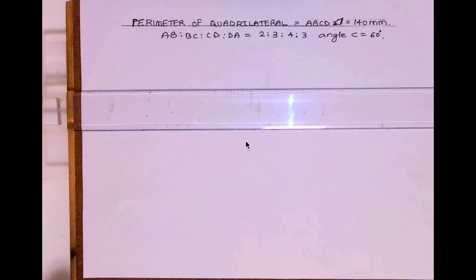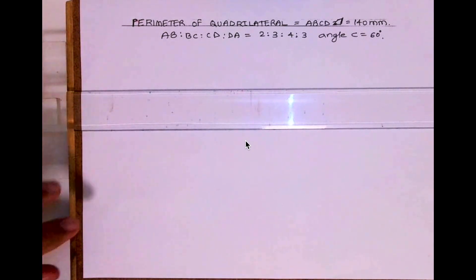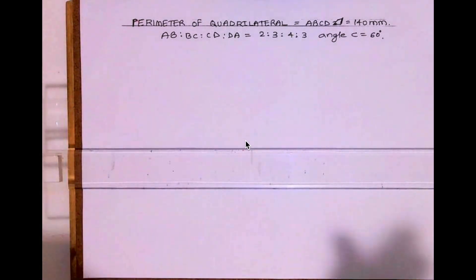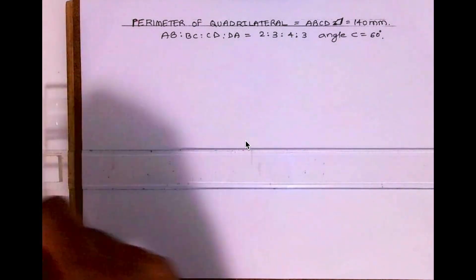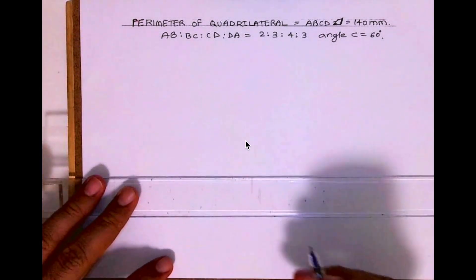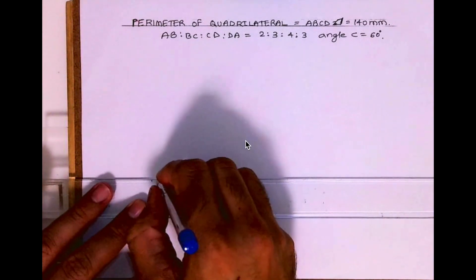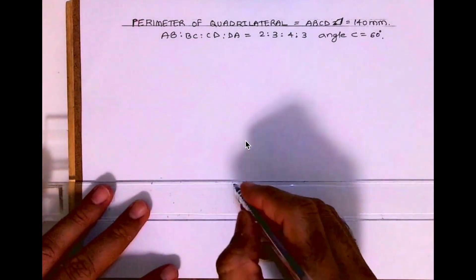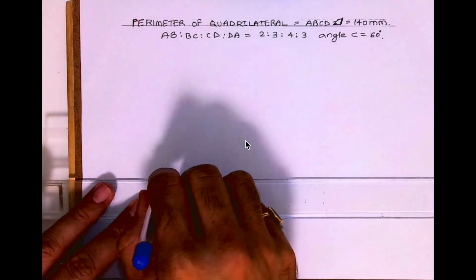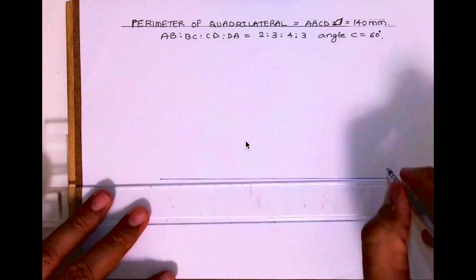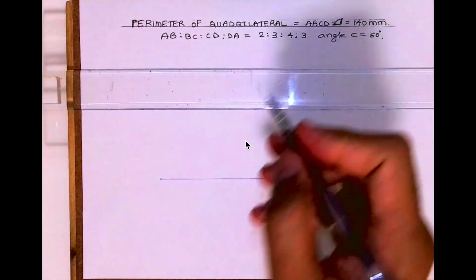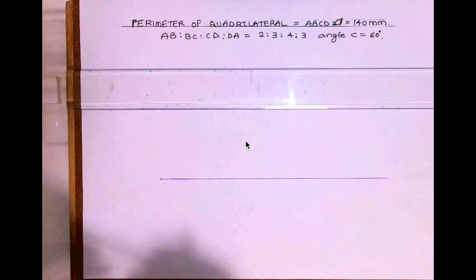Welcome to technical drawing. Today we learn how to draw a quadrilateral. The perimeter is given — 140 mm — and the sides are in the ratio of 2:3:4:3, with angle 60 degrees.